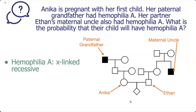Let's remind ourselves about the inheritance pattern. Hemophilia A is X-linked recessive, and we can label the genotypes on Anika's paternal grandfather and Ethan's maternal uncle. We can also label Anika's father's genotype. Anika's father doesn't show the trait, so we know he's X-Y. The paternal grandfather cannot give the X to his son — he transferred the Y — so that hemophilia A allele didn't pass on on that side.